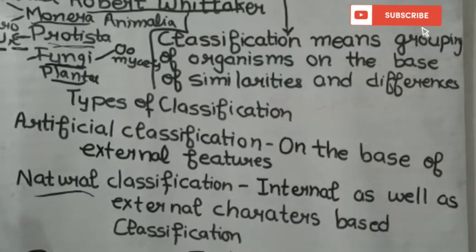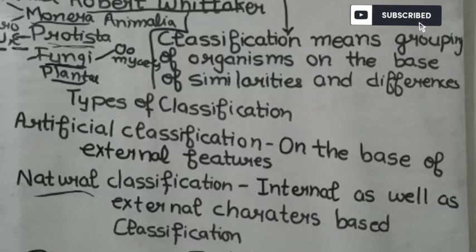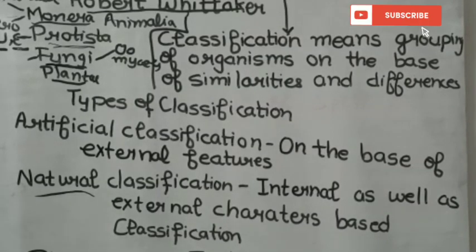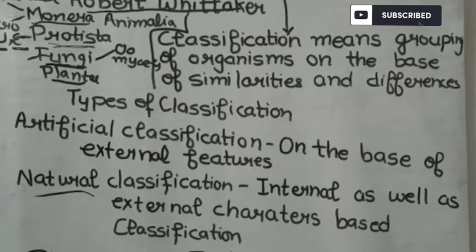So, classification. The 5 Kingdom Classification was given by Robert Whittaker. Classification means grouping of organisms on the basis of their similarities and differences.